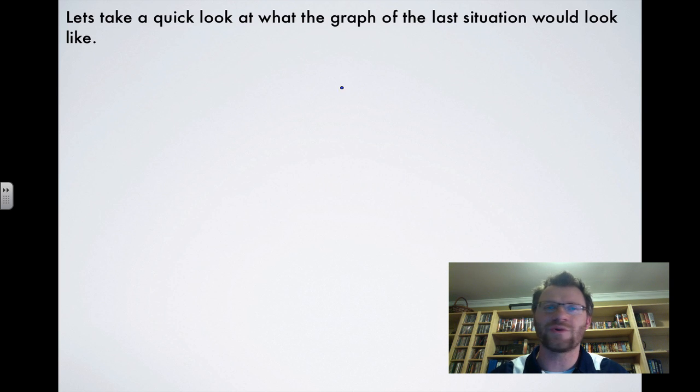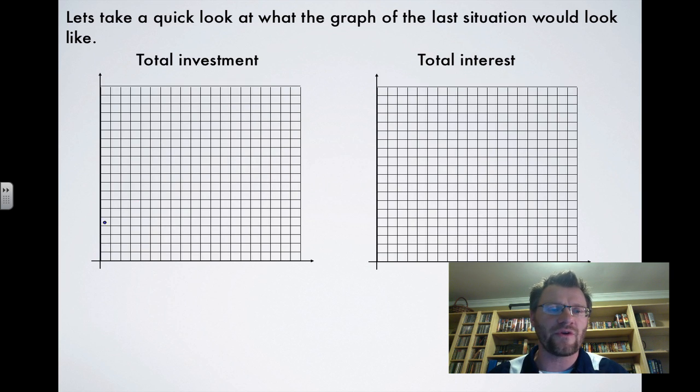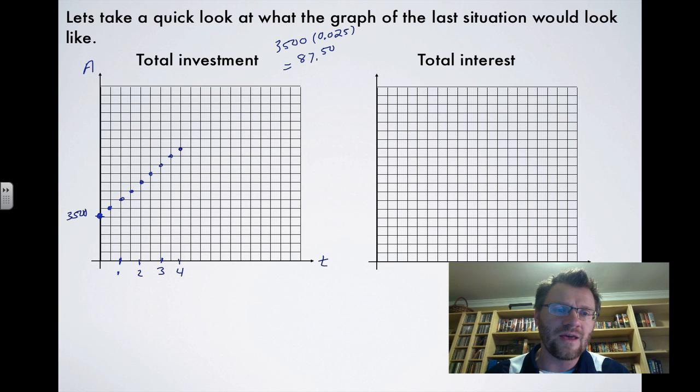All right, we're taking a quick look at what the graph of the last situation would look like. And in one case, we're looking at the total investment. Other case, we're looking at the total interest that that person made. So Albert initially started off with $3,500. So that would be like a point on your y-axis. If your y-axis was the amount of money that he had, and then your x-axis would be how much time elapsed. So in investing $3,500 at an annual interest rate of 5%, he was only making 0.025% every time they calculated it. Because it was being calculated semi-annually. So if this was after one year, this would be after two years, be after three years, etc, etc, etc. He was only making $87.50 every half a year. So every dot that you put on this graph, the increment here would be another $87.50, up another $87.50, then up another $87.50, up another $87.50, etc, etc, etc. So what you're getting is just a series of dots on this graph.